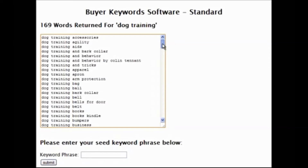This is great if you're trying to put any content on the internet, sell anything with Adwords, or for really any reason. If you're selling on Amazon — especially for Kindle — this is absolutely incredible.